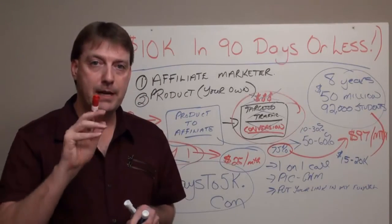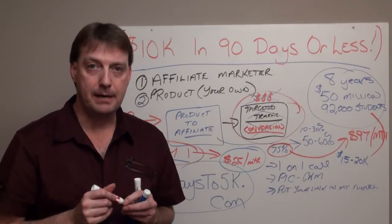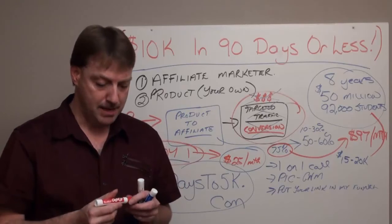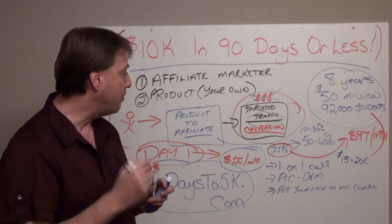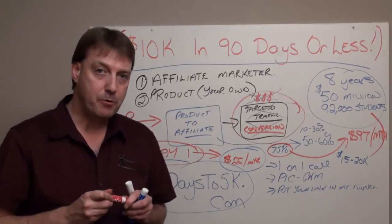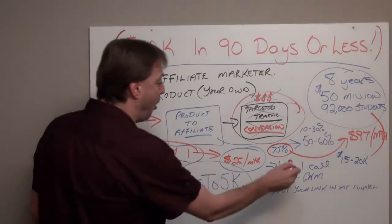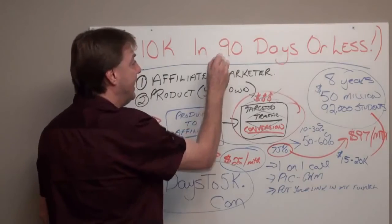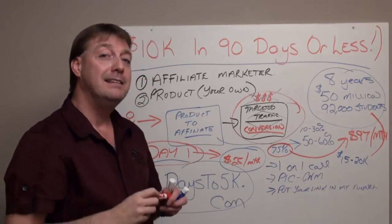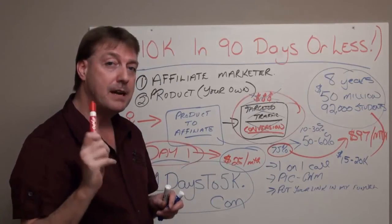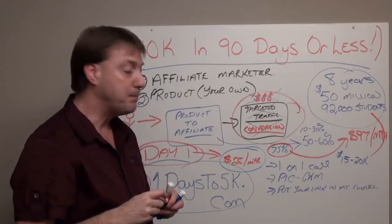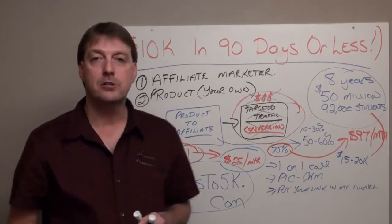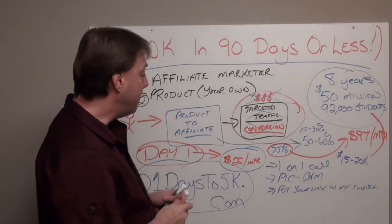When you fill out that order form and get involved with that company, that company is going to send me an immediate email that you are part of my team and my program. From there, I'm going to call you personally and create a 90-day success plan that will generate $10,000 in residual income per month in 90 days or less. Plus, I'm going to activate your account inside my Platinum Insider Circle membership site.